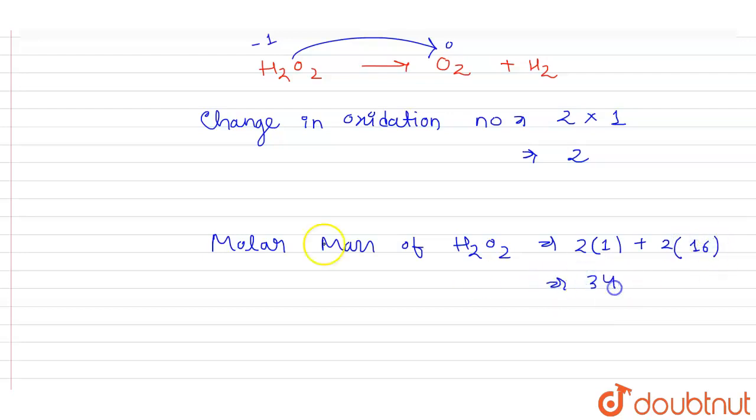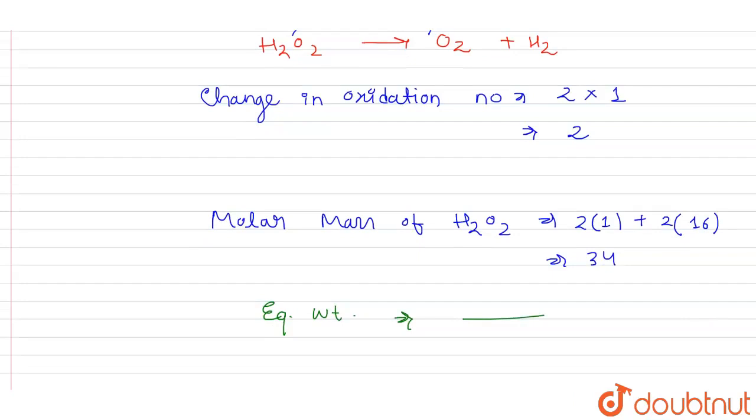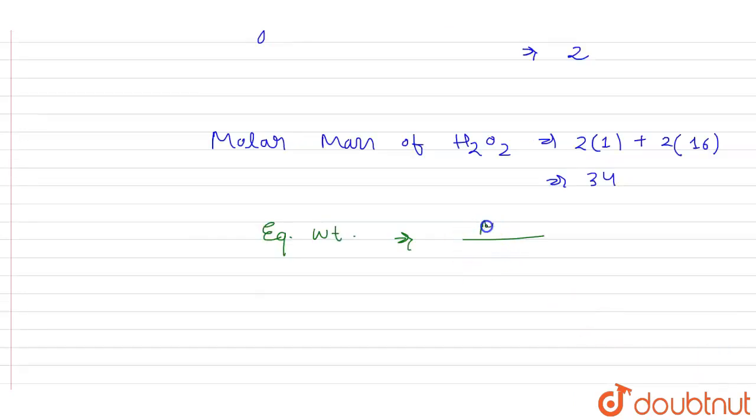The gram equivalent weight of any compound - the formula is molecular weight divided by the valency or combining power.